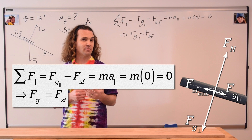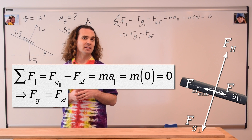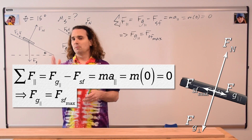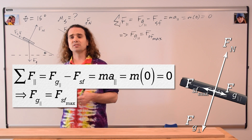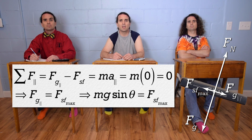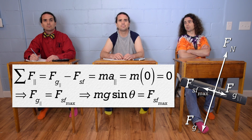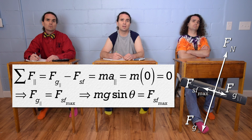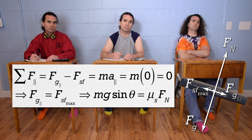Mr. P.: Because it is static friction, the book isn't moving yet, which means acceleration in the parallel direction equals zero. Bobby, substitute in some equations please. Force of gravity parallel is mass times acceleration due to gravity times sine θ, which equals the maximum force of static friction, which is the coefficient of static friction times force normal.